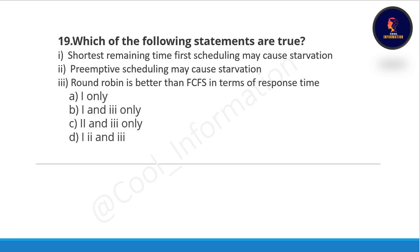Question nineteen: which of the following statements are true? Statement one: shortest remaining time first scheduling may cause starvation. Statement two: preemptive scheduling may cause starvation. Statement three: round robin is better than first come first serve in terms of response time. The correct option is option D: all three statements are true. This question has also been asked in GATE 2010.